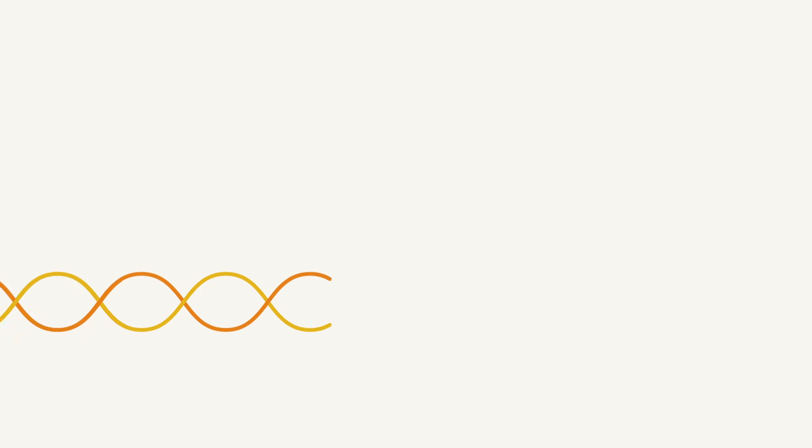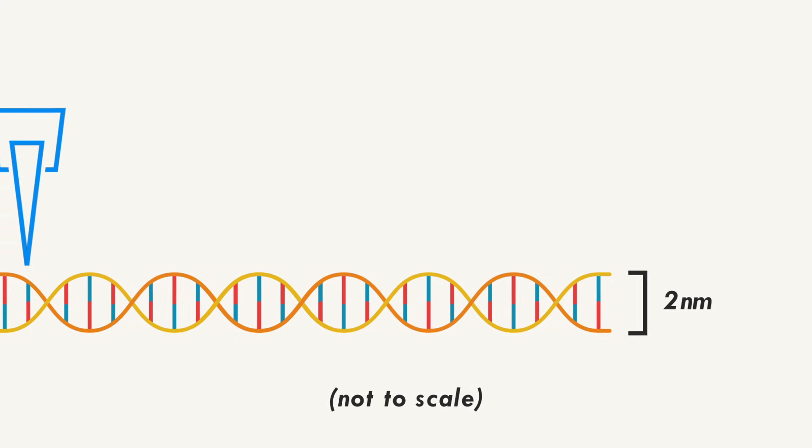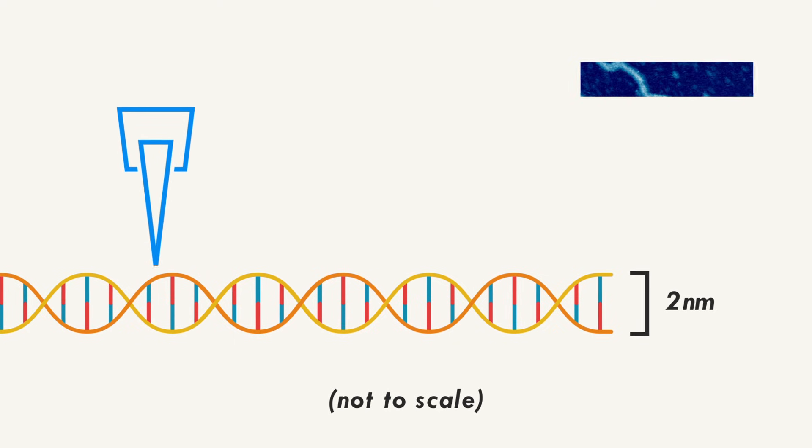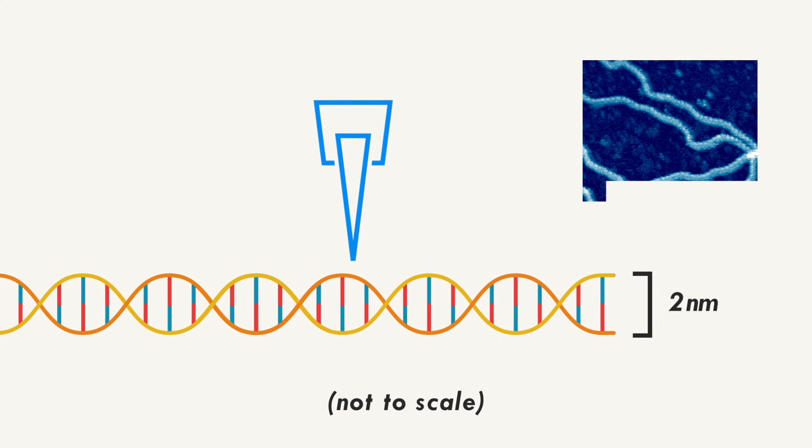The best we've done is by basically dragging a ridiculously small needle across the DNA and feeling the bumps, sort of like a nanometer scale record player. Now, all these methods and others have given us an accurate model of DNA's double helix. But still, this isn't really the whole story.